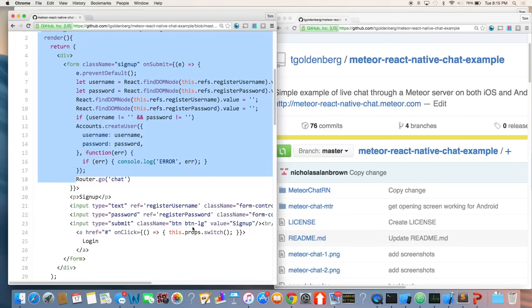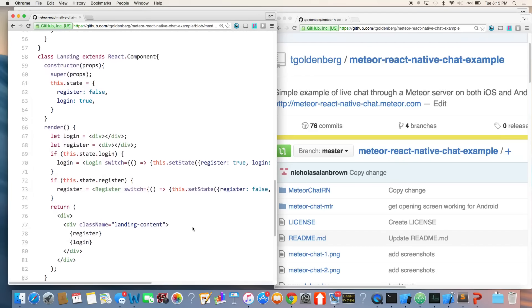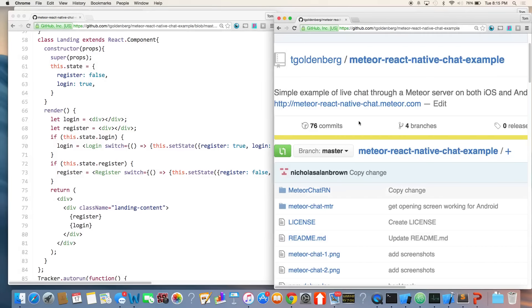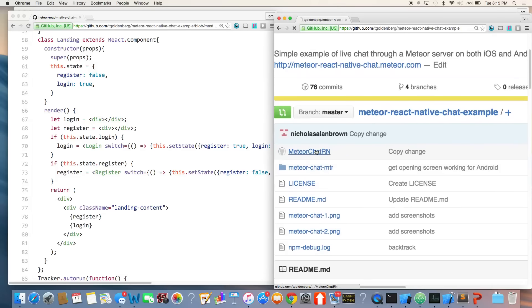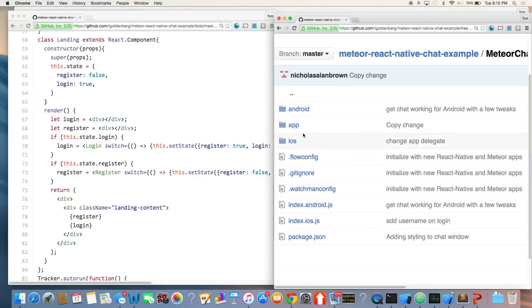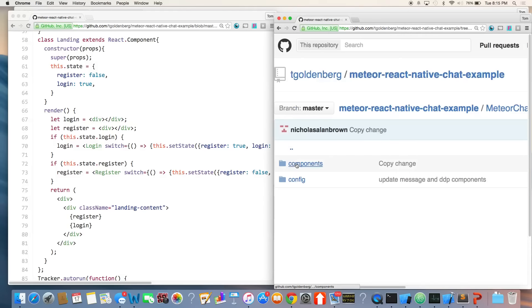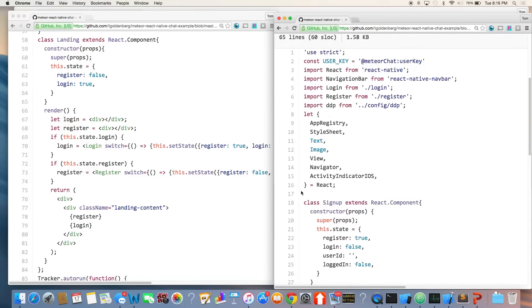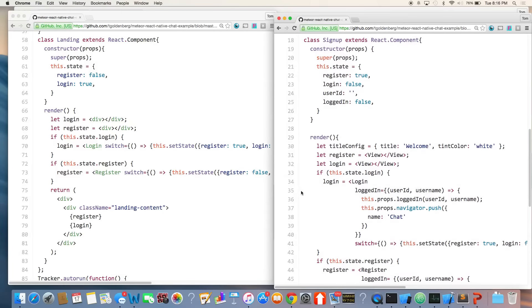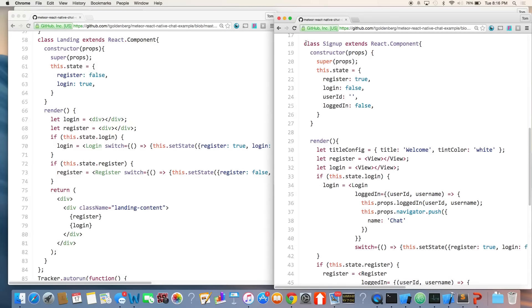So let me now compare. So this I showed you is the landing component for the Meteor app. If we look into React Native, this is my React Native app. And I go into app, components, sign up. It's basically the same thing. Same thing, I'm just creating a React class. Here, I have register and login as variables. And when register is set to true, I'm rendering the register component and login's true. Same thing.